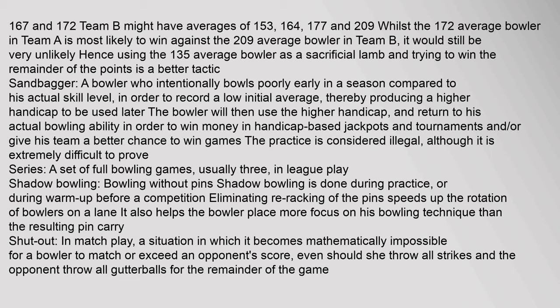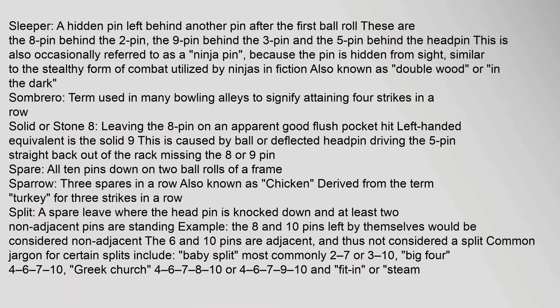Shadow bowling: bowling without pins, done during practice or warm-up before a competition. Eliminating re-racking of the pins speeds up the rotation of bowlers on a lane and helps the bowler place more focus on technique than on resulting pin carry. Shutout: in match play, a situation in which it becomes mathematically impossible for a bowler to match or exceed an opponent's score. Sleeper: a hidden pin left behind another pin after the first ball — the eight pin behind the two, the nine pin behind the three, and the five pin behind the head pin; also known as a ninja pin, double wood, or in the dark.